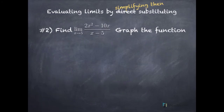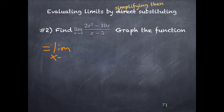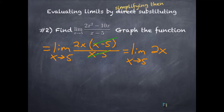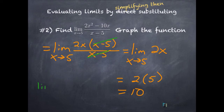Let's evaluate this one by simplifying and then substituting. If we use direct substitution, 5 minus 5 is 0 — we're dividing by 0, so let's simplify. The numerator has a GCF of 2x, leaving x minus 5 in parentheses. We have x minus 5 in the denominator. Dividing those cancels to 1, so this simplifies to the limit as x approaches 5 of 2x. Now substitute: 2 times 5 is 10. The limit as x approaches 5 of 2x squared minus 10x over x minus 5 equals 10.